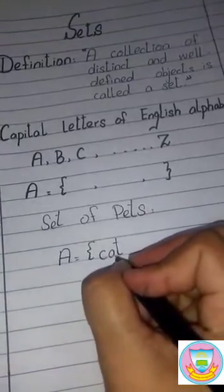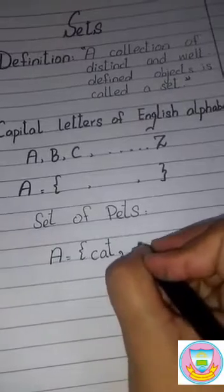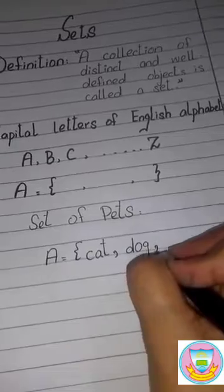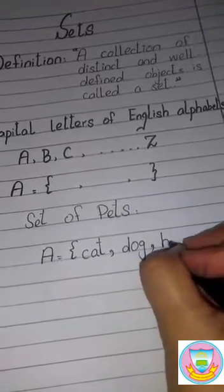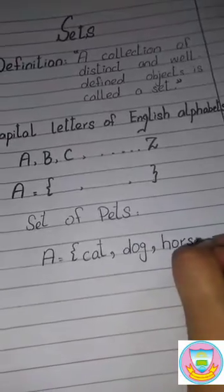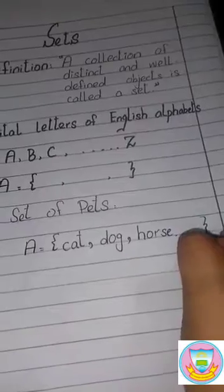Separate the element by using a comma, then dog, then horse. Friends, now close the set. So we use a dotting line and then bracket, close.